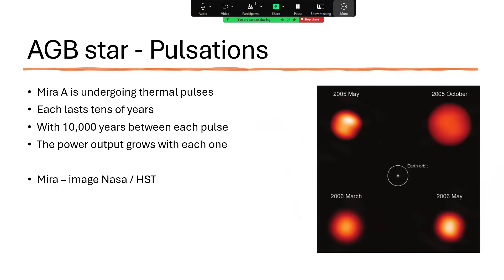But in addition to the 11-month pulsation, it undergoes outbursts, thermal pulses taking 10 years. And these occur at around about 10,000 year intervals. And every time it does so, according to theory, then the power output of the whole star ratchets up one notch. And so gradually, this is accounting for it changing over time.